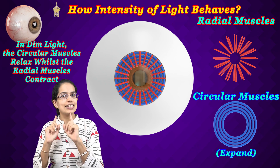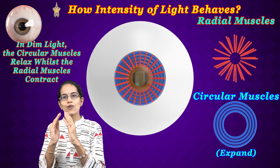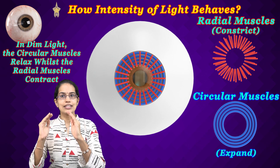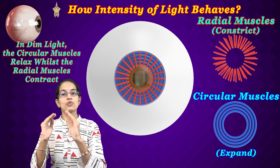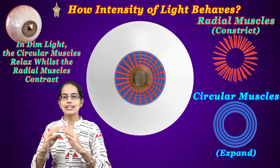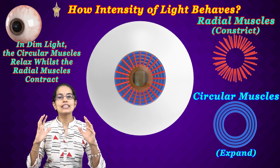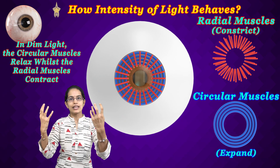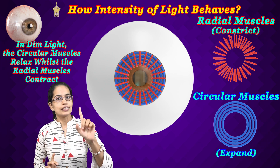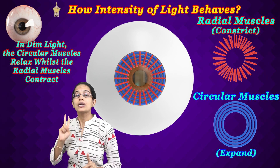The radial muscles behave oppositely. In dim light the radial muscles constrict, and in bright light the radial muscles relax. This is how the intensity of light entering the eye is regulated — the first key concept.